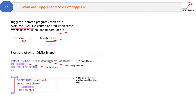Here is the trigger written for the locations and location_history example. The trigger name is tr_update_locations and the table is locations. It is an update trigger — if any update happens on the locations table, a value will be inserted into the location_history table. Whenever there is any update in the location table, this trigger will fire and execute the insert logic, inserting the location ID and date from INSERTED into location_history.